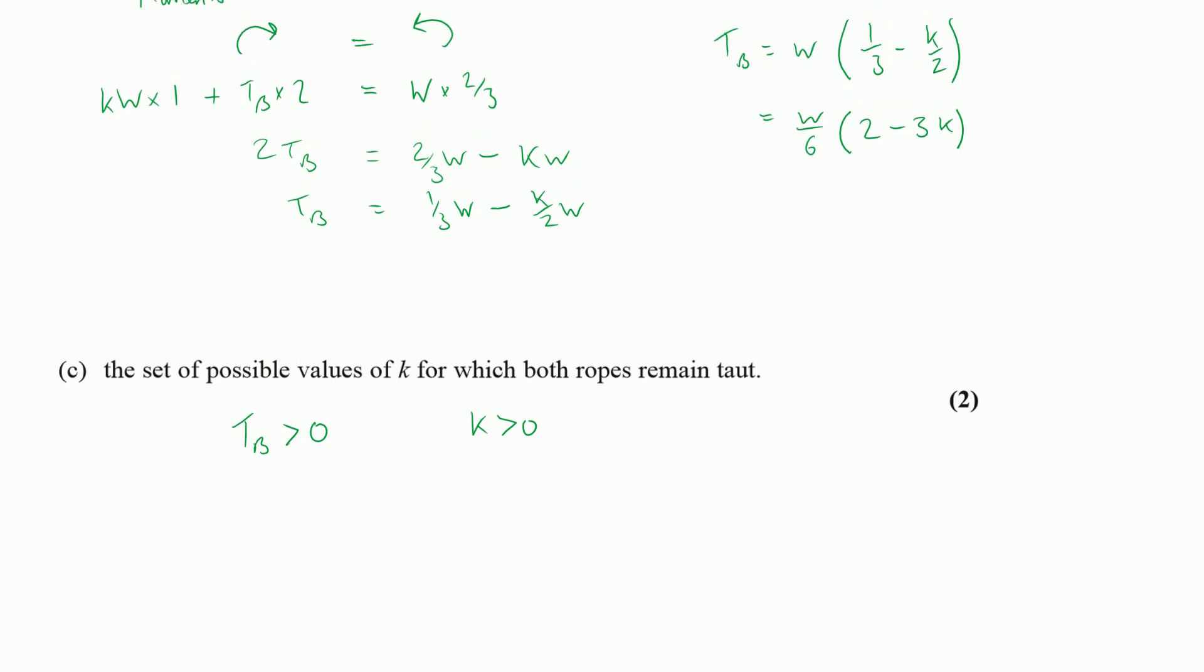And I want the tension at B to be strictly greater than 0. Well what is the tension at B? We worked that out in the previous question. To say that the tension at B is greater than 0 is the same as saying that W on 6 lots of 2 minus 3K should be greater than 0. And if that's going to be true, I know that W is greater than 0 because that's the weight of the object and we can't have negative weight. So what we're going to have here is that 2 minus 3K must be greater than 0. Or that 2 must be greater than 3K. Or if I then divide by 3, I find out that 2 thirds must be greater than K. And now I'm done because I know that K needs to be greater than 0 and I also need to know that K must be less than 2 thirds. So my final answer is 0 less than K less than 2 thirds.